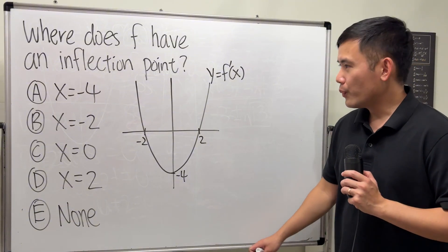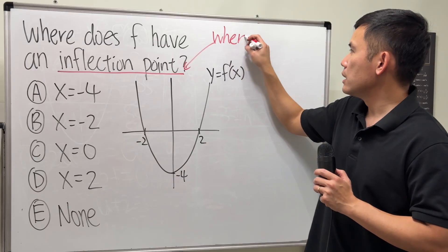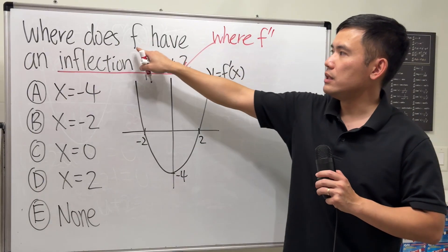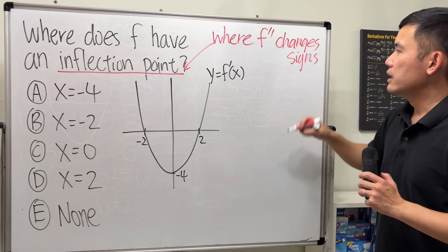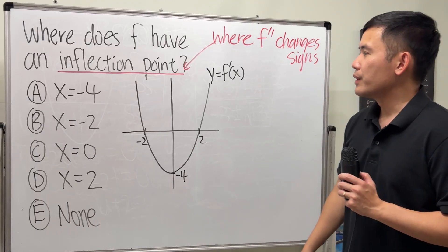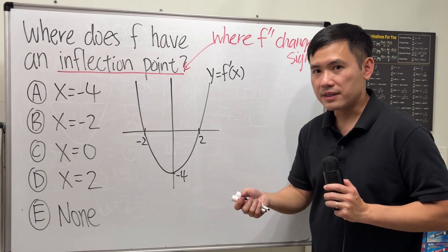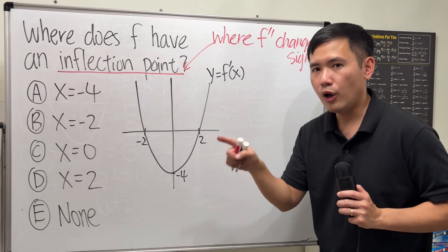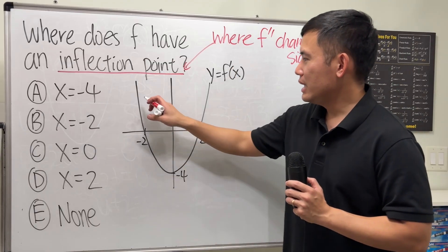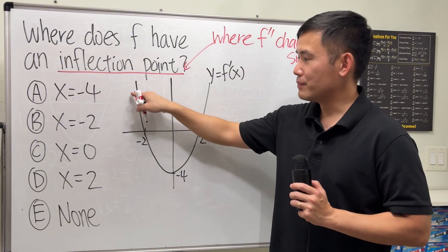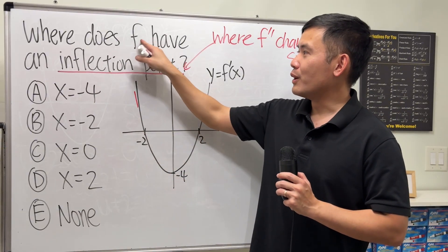So how do we answer this? We only have the first derivative. Remember, the derivative is the slope. So if you look for the slope of the derivative graph, that will give us the second derivative of the original. For example, if you look at this region, the slope right here is negative — and the slope of the derivative graph being negative tells us the second derivative of the original is negative.